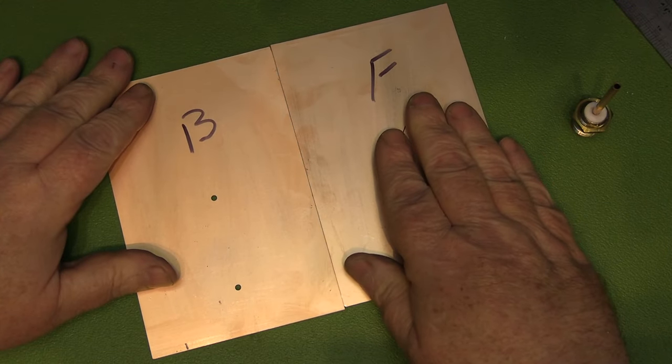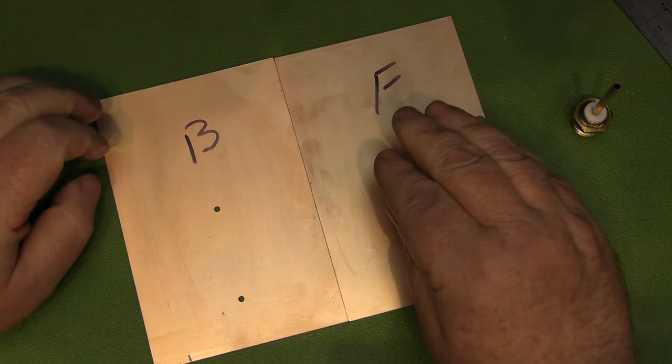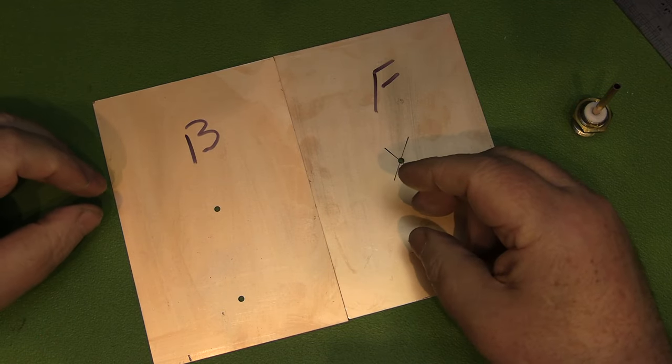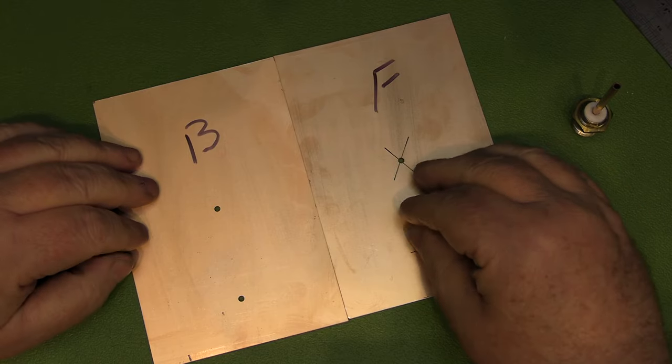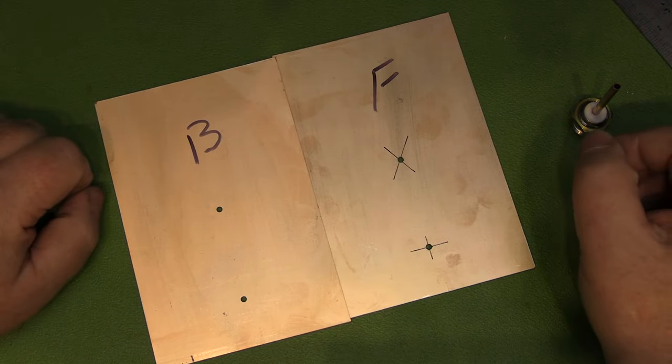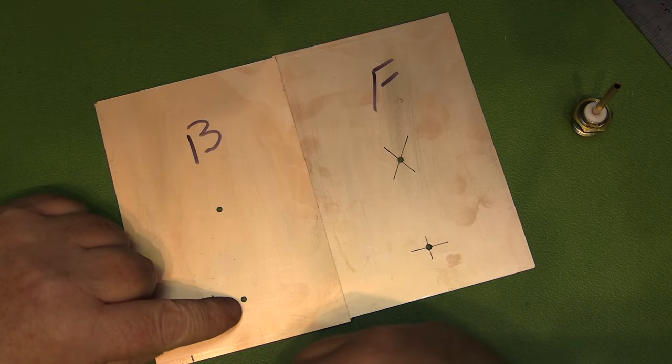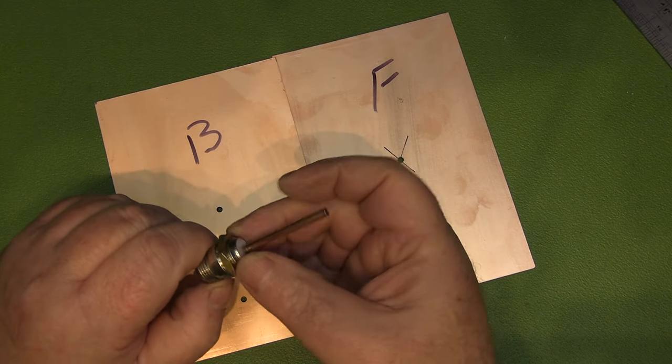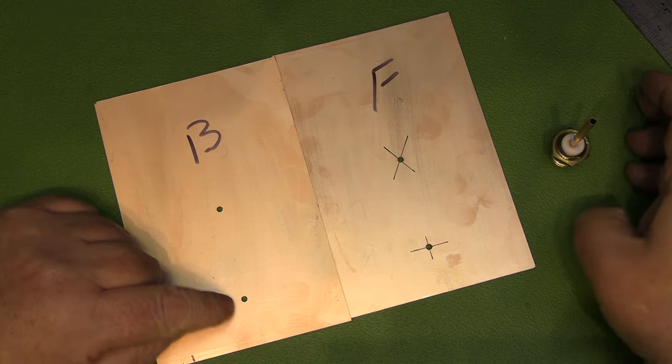I've got my two pieces of PCB here, and I've marked them front and back so I don't get confused, because we're going to have different diameter holes in each one. This one's F, this one's B. What I'm going to do first is enlarge this hole here so we can fit the N-type connector through and bolt that down.